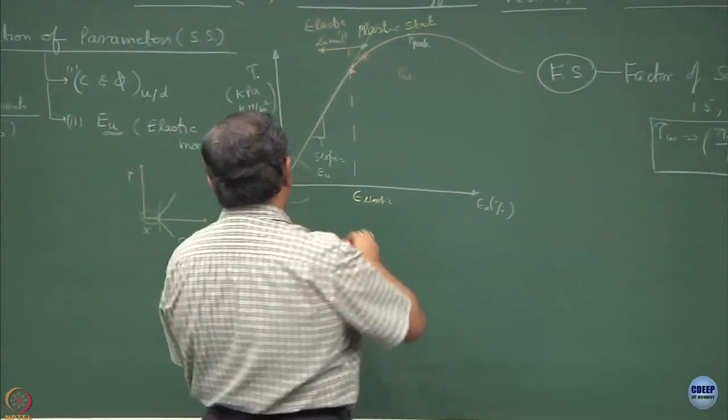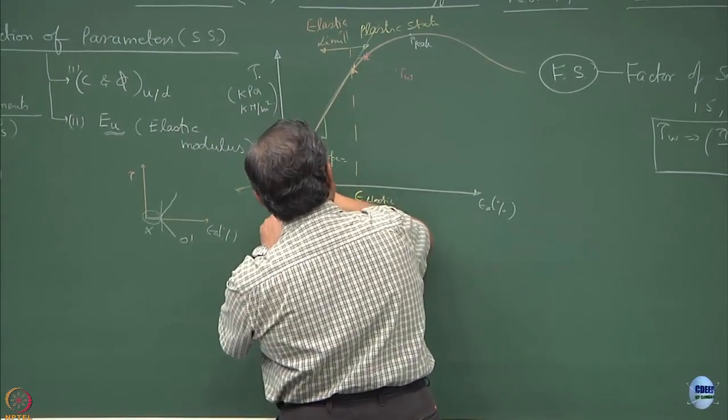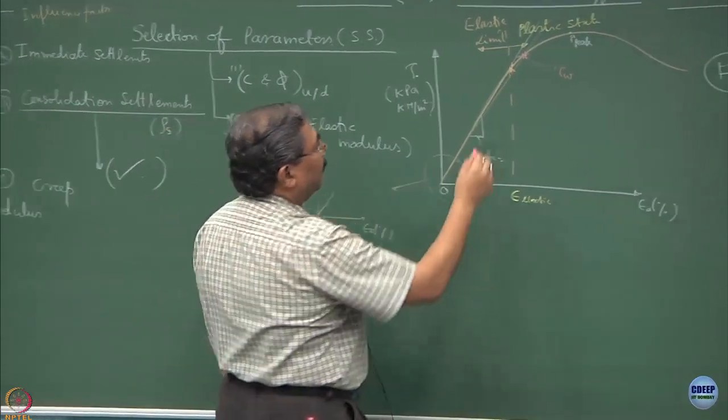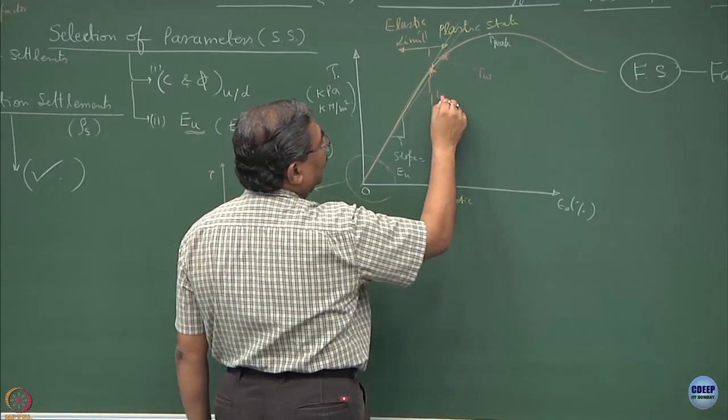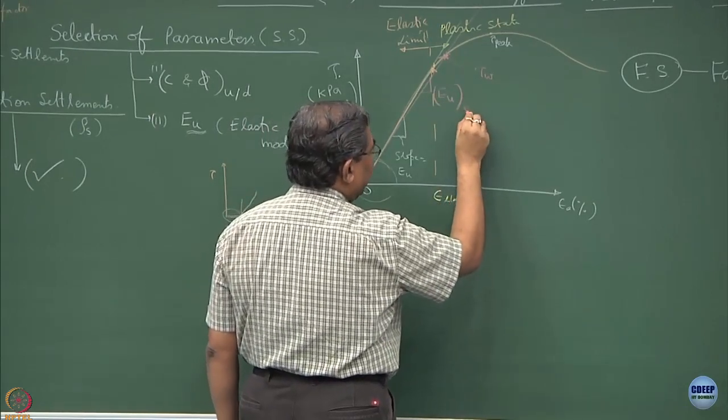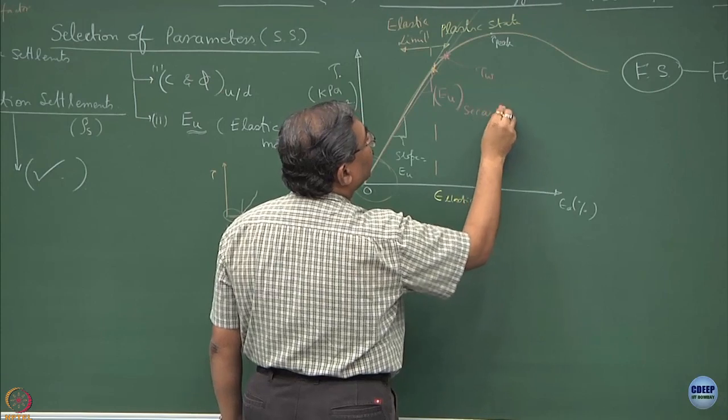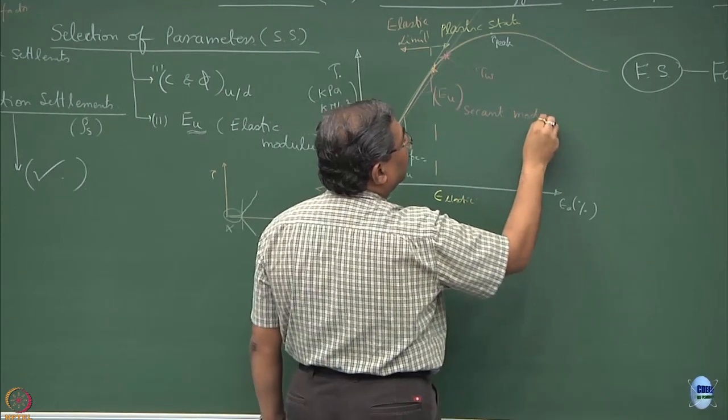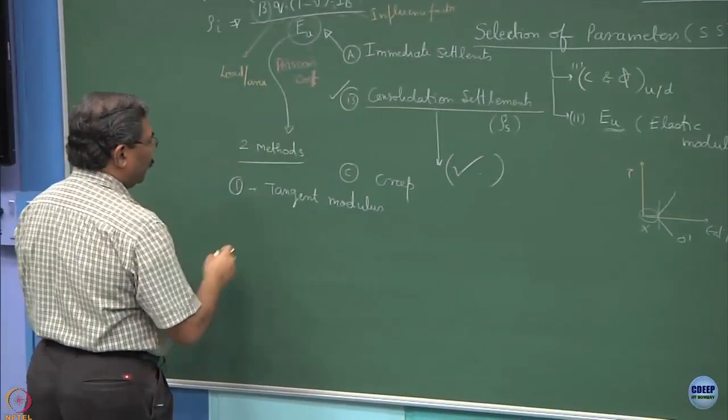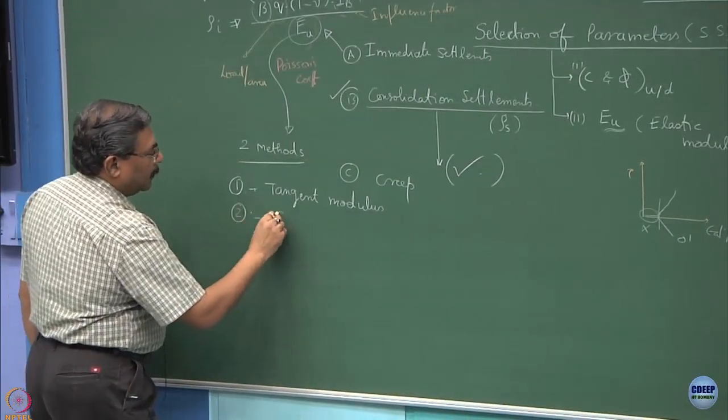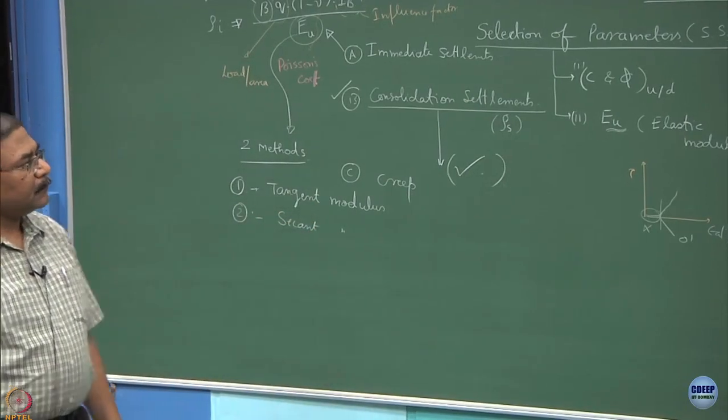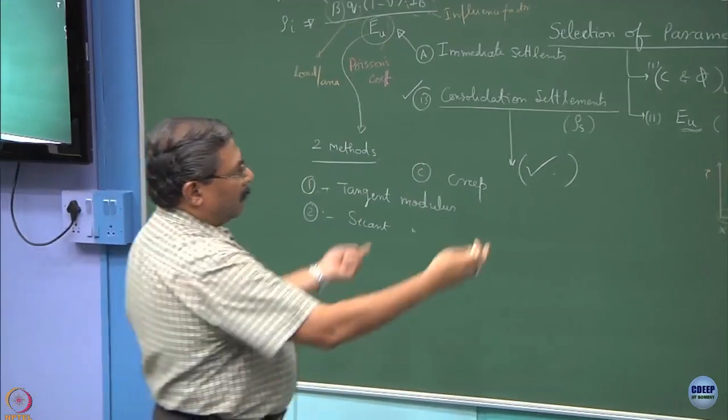If I join the origin with this point and obtain the slope, this is also Eu, but this is what is defined as the secant modulus. The second method of obtaining the Eu value would be the secant modulus. Once you have obtained Eu, the question is how to obtain mu value?